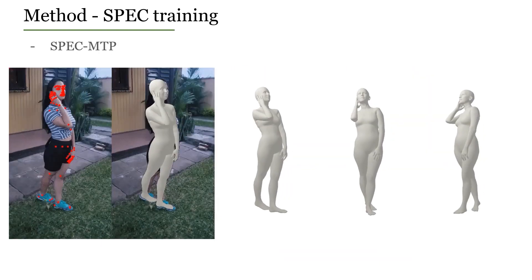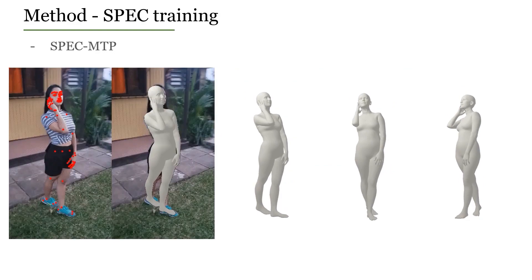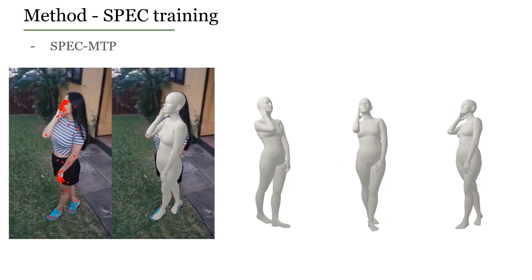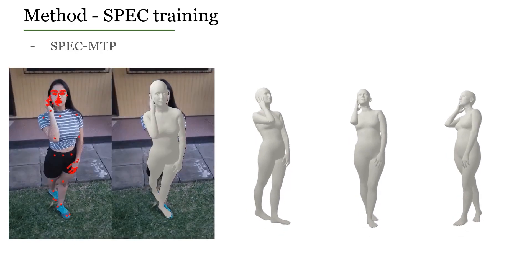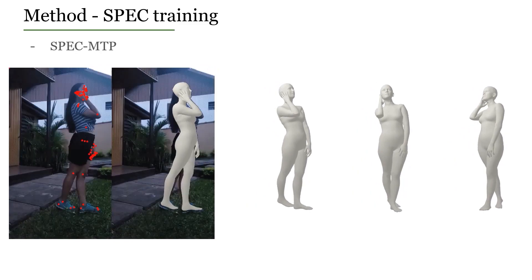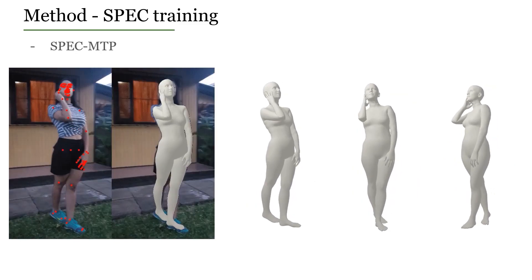Second, we collect a crowd-sourced dataset. We instruct subjects to calibrate their camera and take videos from different angles while mimicking a predefined pose. Then, we obtain pseudo-ground truth labels by fitting the SMPL model to the videos, while exploiting the predefined pose as a prior.